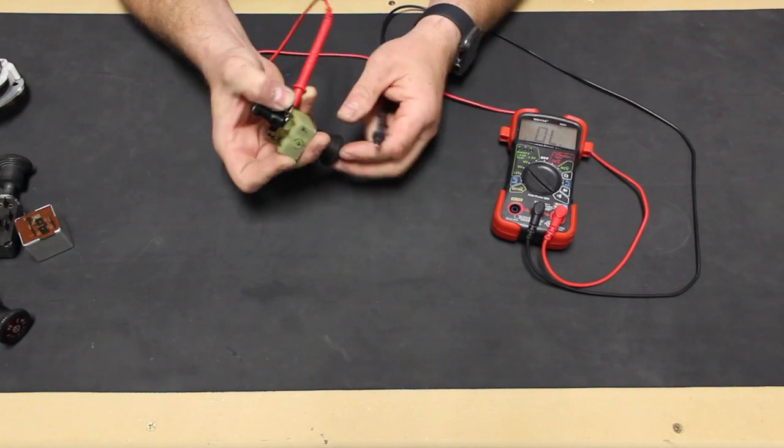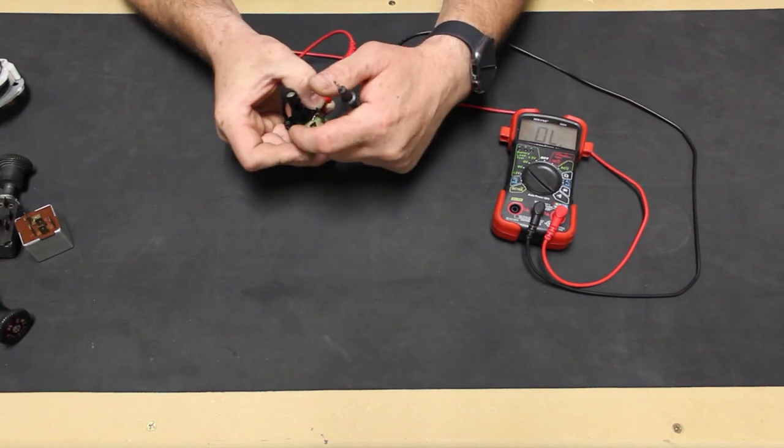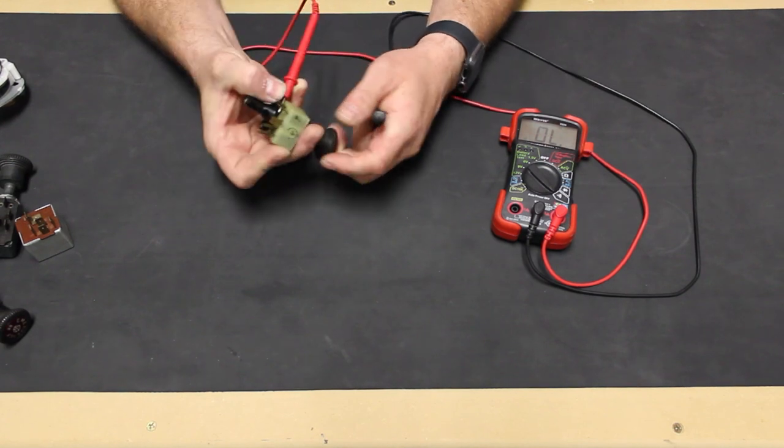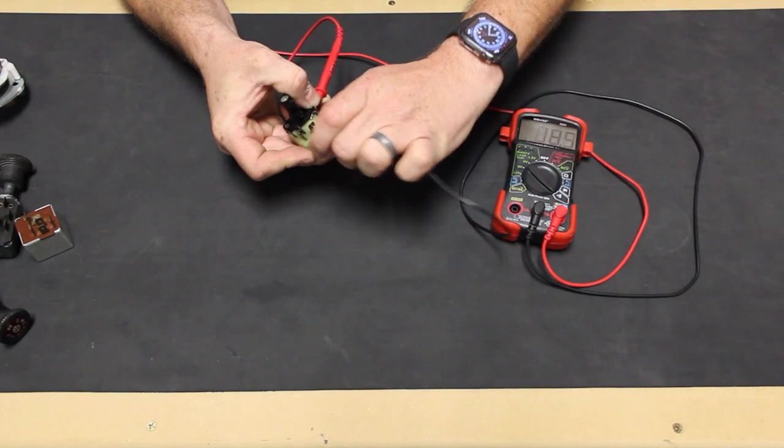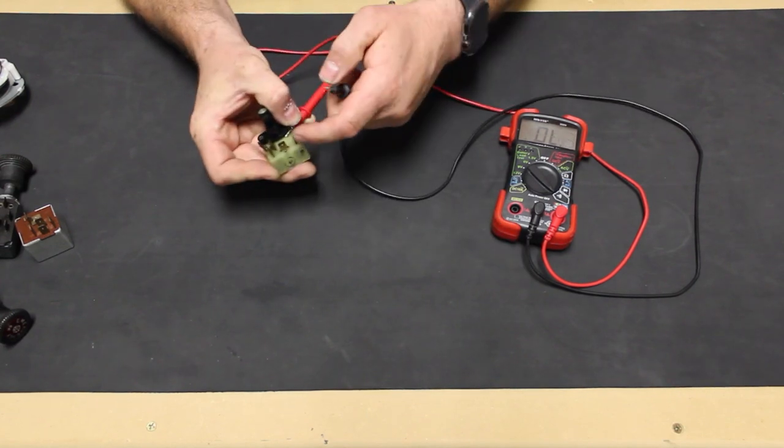Next, we can test the speed 1 position, so we turn the switch and check for continuity at the middle 53 terminal. Then we turn the switch to speed 2 and check for continuity at the 53B terminal.